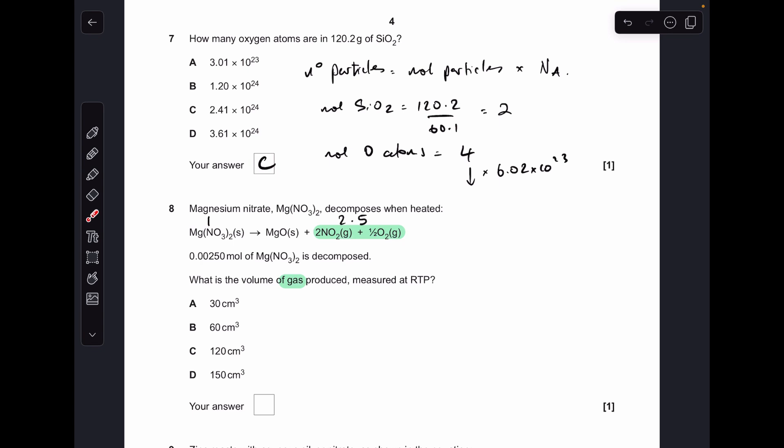Number eight, just need to be careful that we factor in all of the gaseous products. One mole of magnesium nitrate decomposes to give two and a half moles of gas, so that means that many moles of magnesium nitrate will give that many moles of gas. Because the calculation's at RTP, we just multiply by the molar gas volume to get the volume of that gas. I've multiplied by 24,000 so it gives me an answer in cubic centimeters, which is option D.